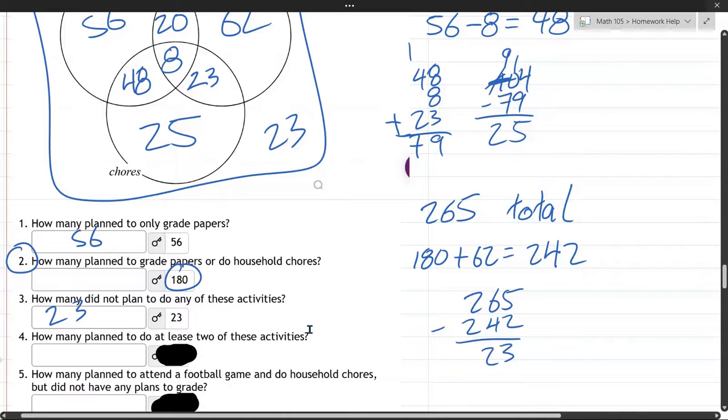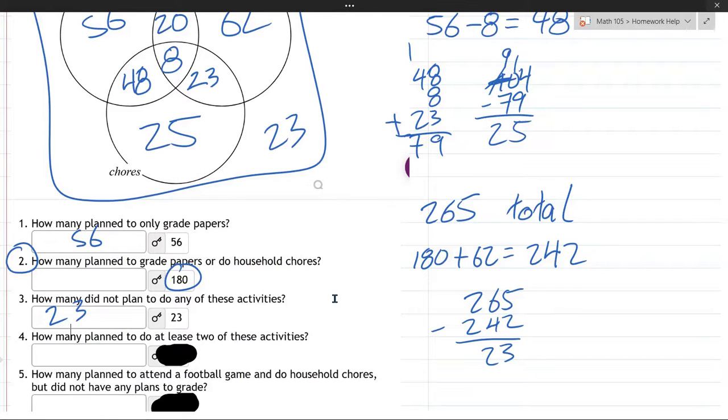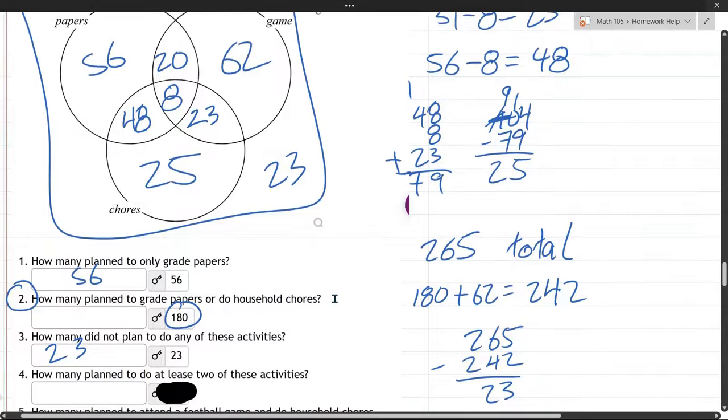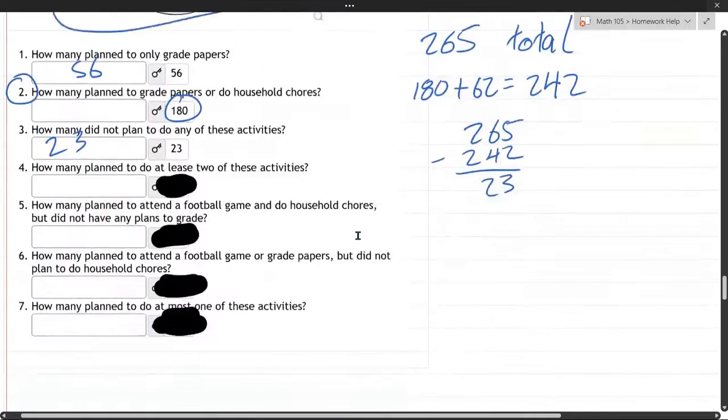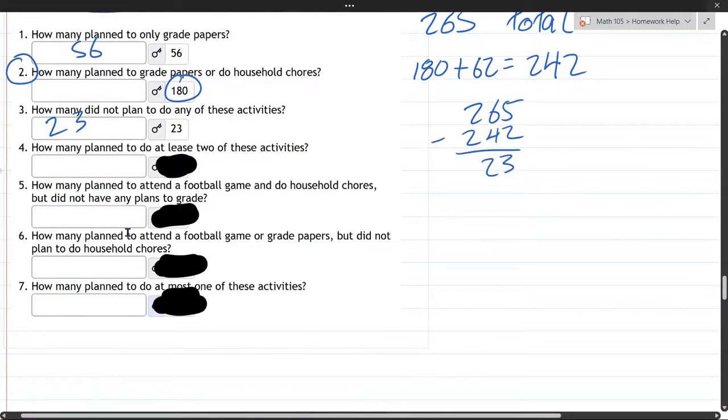Alright. Number four. How many plan to do at least two? So, at least two. It means, in this case, there's three activities. So, they're either doing two or three. So, one way to do it is everybody in this centerpiece right here is doing two or more. So, you can add those three numbers up. That's probably the best way to get that.